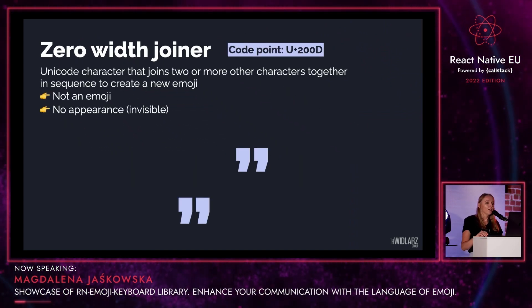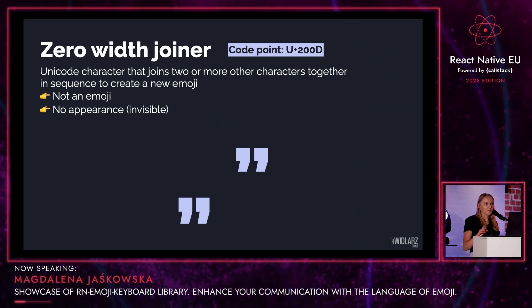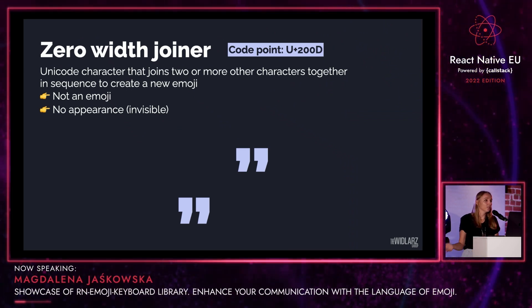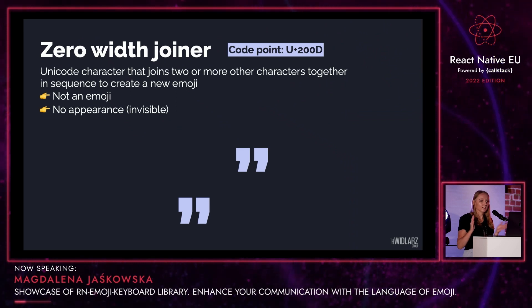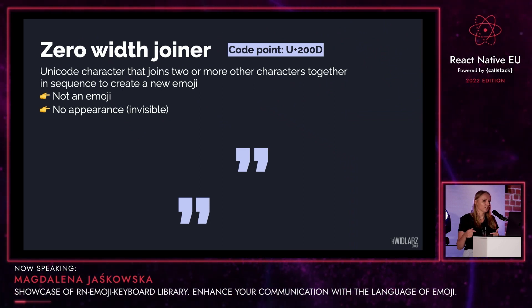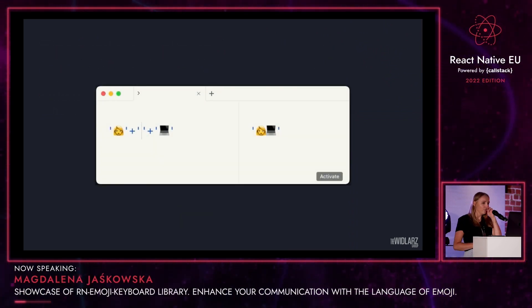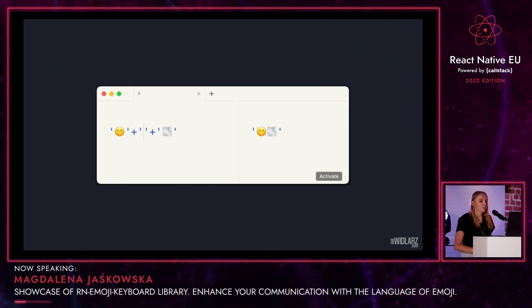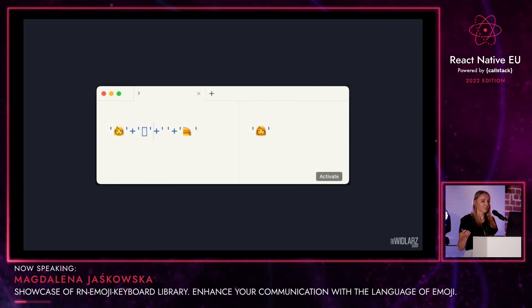Zero Width Joiner. It's a Unicode character that basically joins two or more other characters together in a sequence to create a new emoji. It is also not an emoji itself and it has no appearance — it is invisible. When showing some examples in a second, you'll have to believe me that I actually pasted something in between two emojis. Woman plus Zero Width Joiner plus laptop is going to give us the woman technologist emoji. No mouth emoji plus fog gives us face in the clouds. We can also use both at the same time — skin tone modifier and Zero Width Joiner — to create even more customizable emojis. Here: woman plus darker skin tone plus red hair.